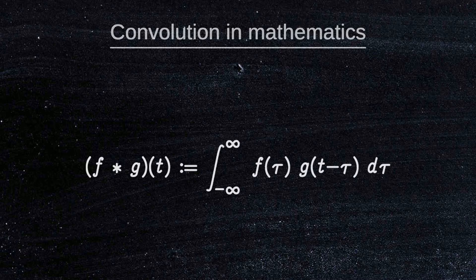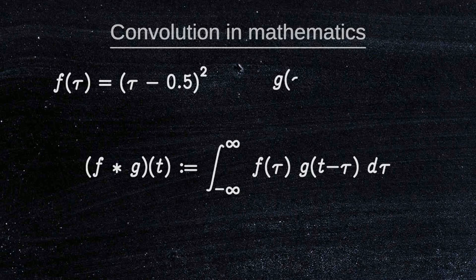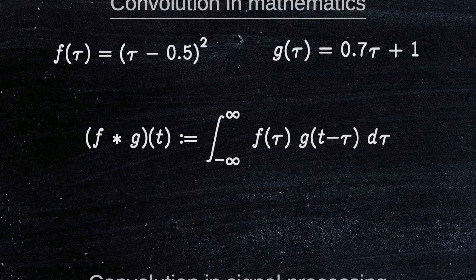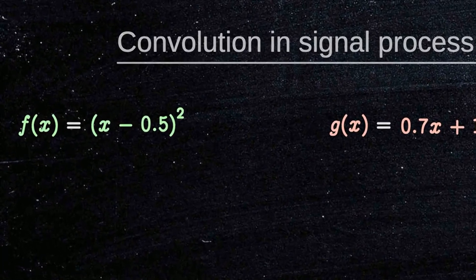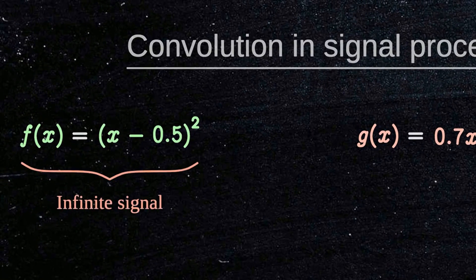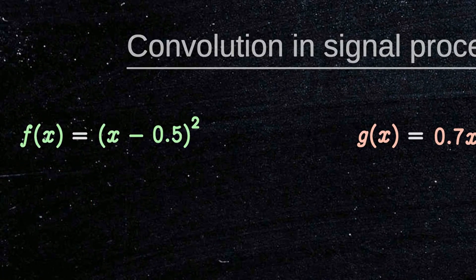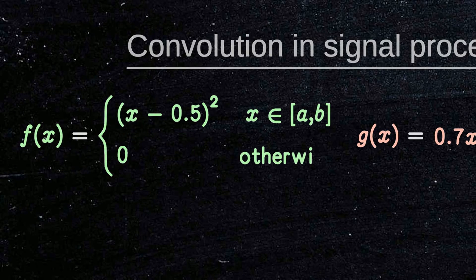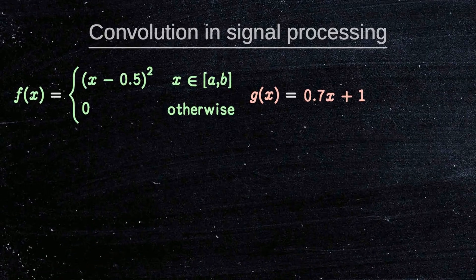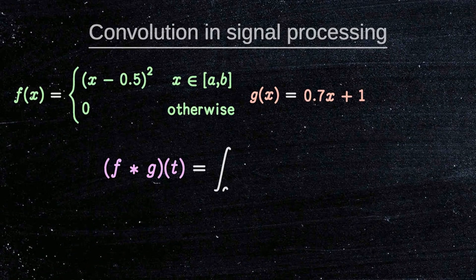Convolution is a subject that must be put in context. What we are seeing on the screen is the mathematical definition of convolution, the convolution of a function f and a function g. However, in signal processing for example, a convolution is an operation between two finite signals. A finite signal is simply a function that's zero everywhere except on a given interval. This interval will also be the interval of integration of the convolution.